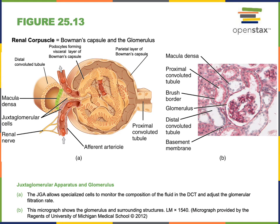Bowman's capsule has two layers: an outer parietal layer consisting of a simple squamous epithelium, and an inner visceral layer consisting of special epithelial cells called podocytes. Podocytes have extensions called pedicles that form filtration slits in order to prevent large particles from exiting the blood and flowing into the lumen of Bowman's capsule.